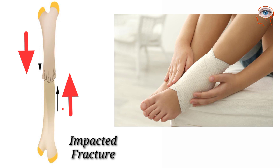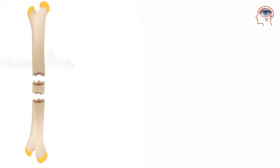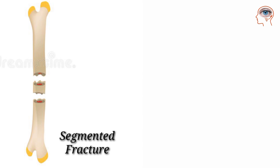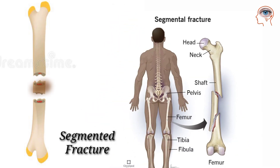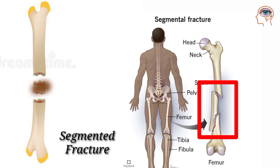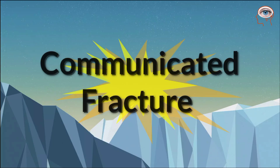Impacted fracture: an impacted fracture occurs when the broken ends of the bone are driven together due to injury. Segmental fracture: this fractures the same bone in two places, leaving a floating segment of bone between the two breaks. This fracture takes longer to heal and can cause complications.